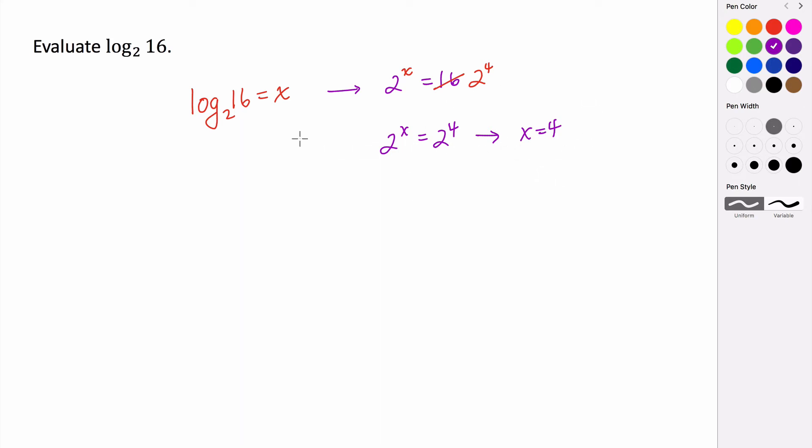So x is equal to 4. So really what this is saying, this whole expression is equal to 4. So this means that 2 to the 4th power is equal to 16. Logs are a way for us to figure out what power we have to raise this base to to get the argument. So let's take a look at another example of this.